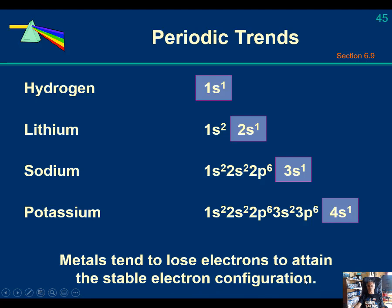So metals tend to lose electrons to attain that stable electron configuration. And we've talked all along that metals tend to give up electrons. Why do they tend to give up electrons? Well, look at lithium here. If lithium gives up its valence electron, its 2s electron, what it has is helium's valence shell for its next shell down.